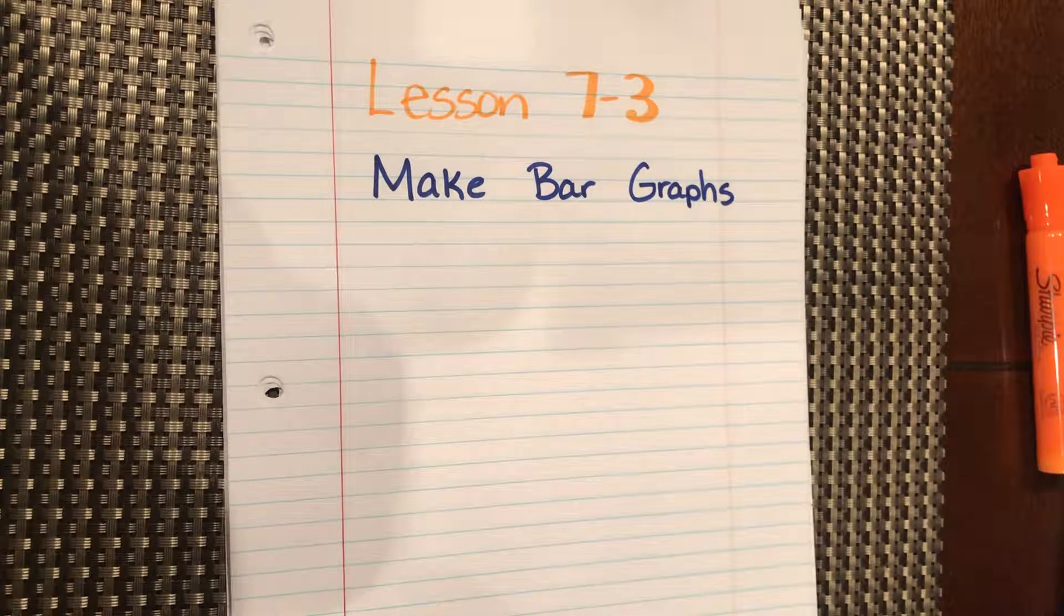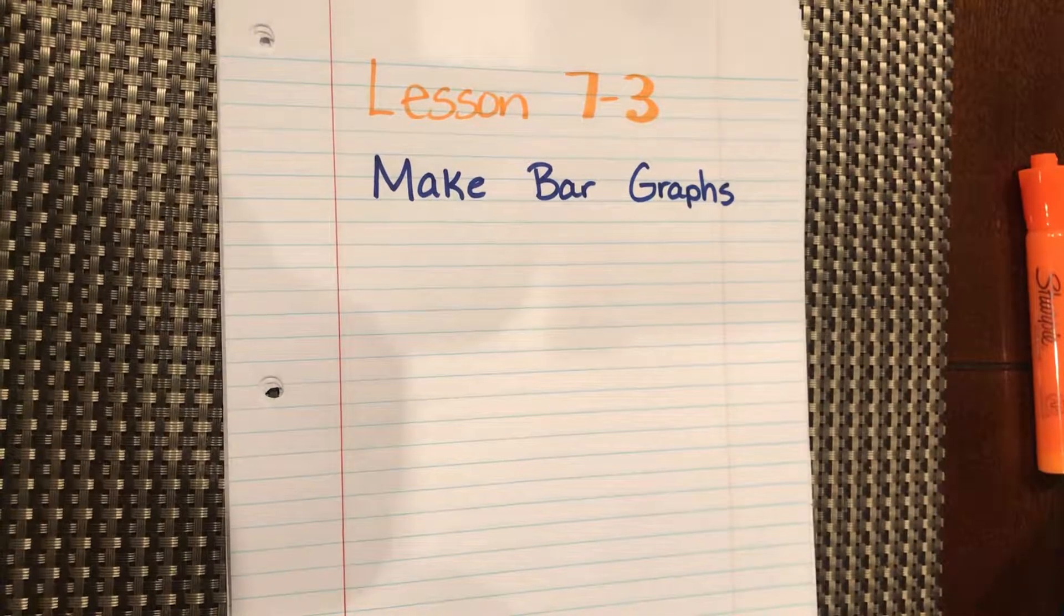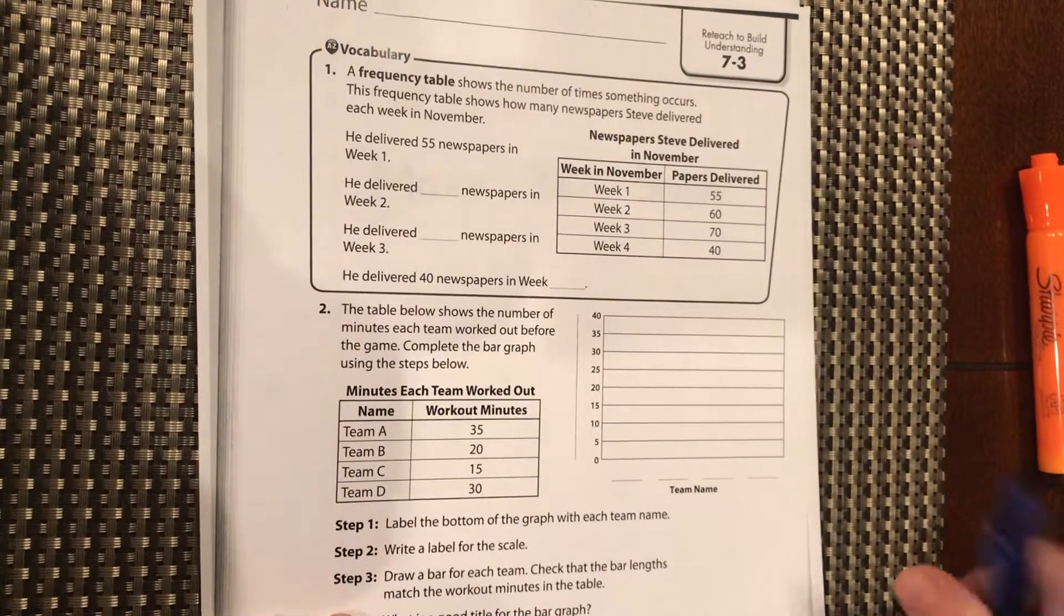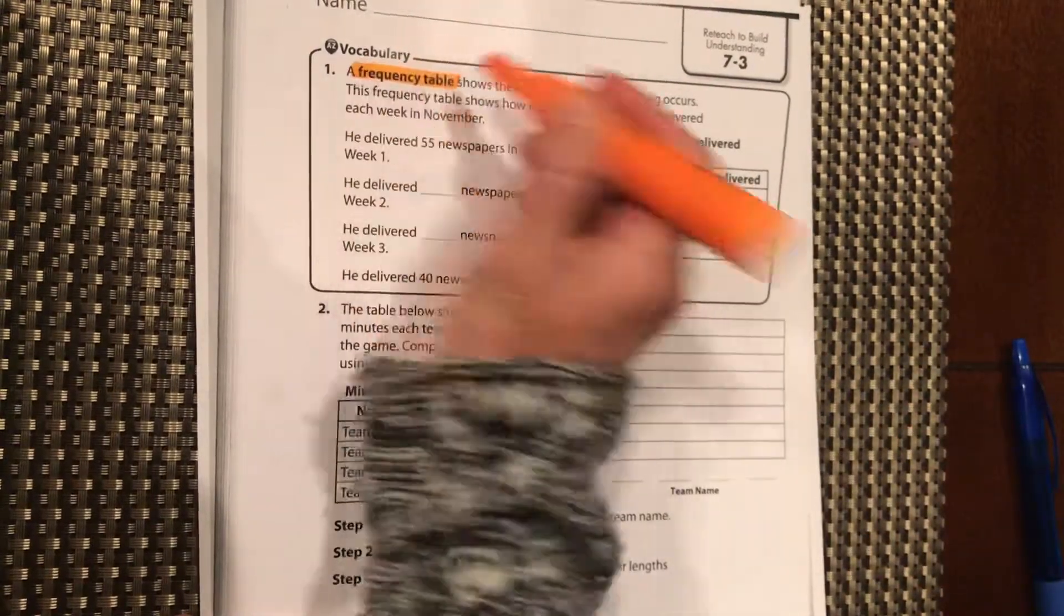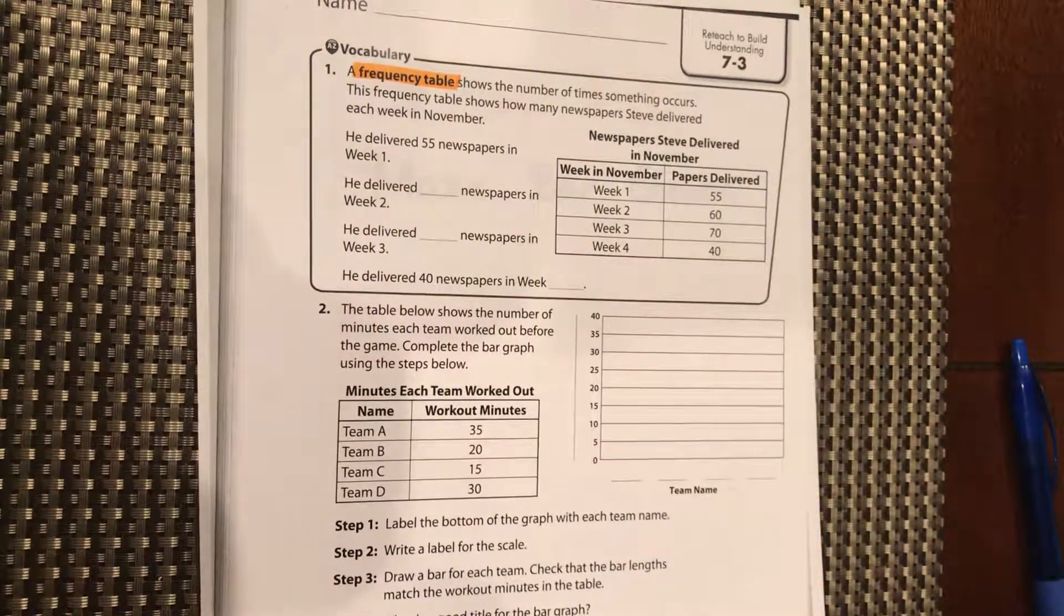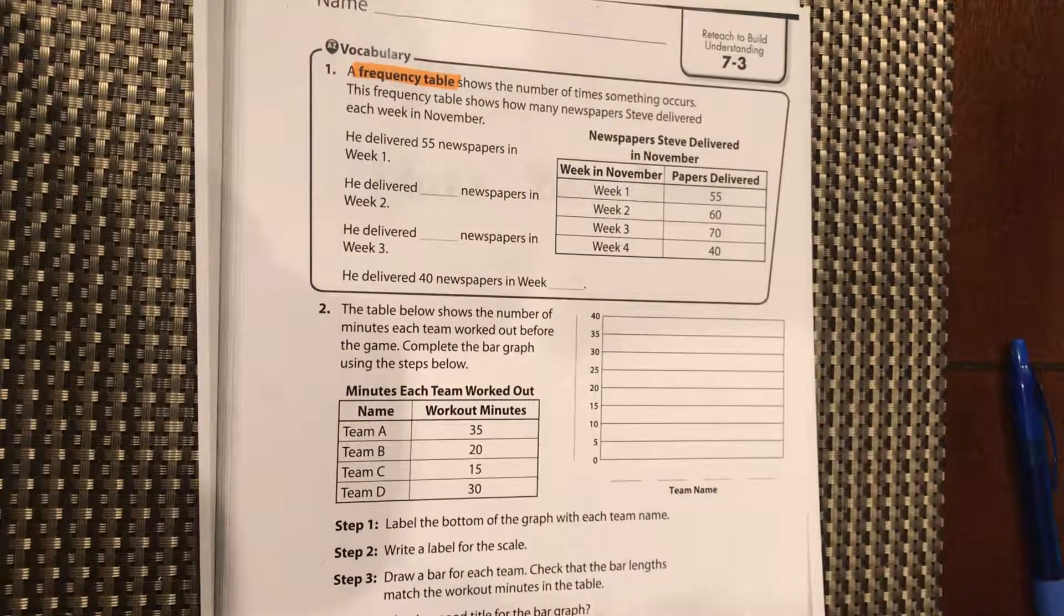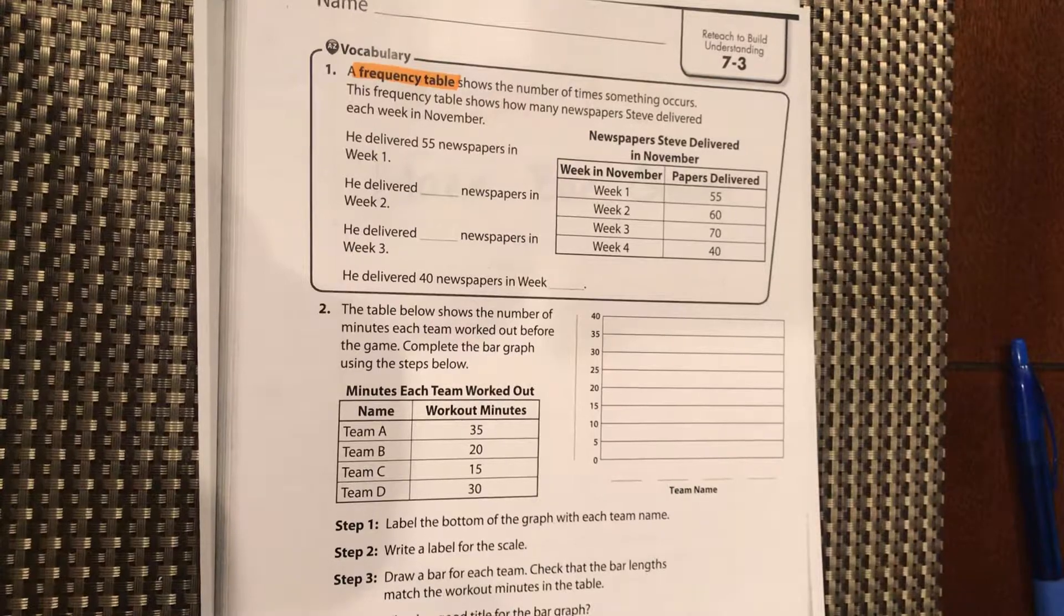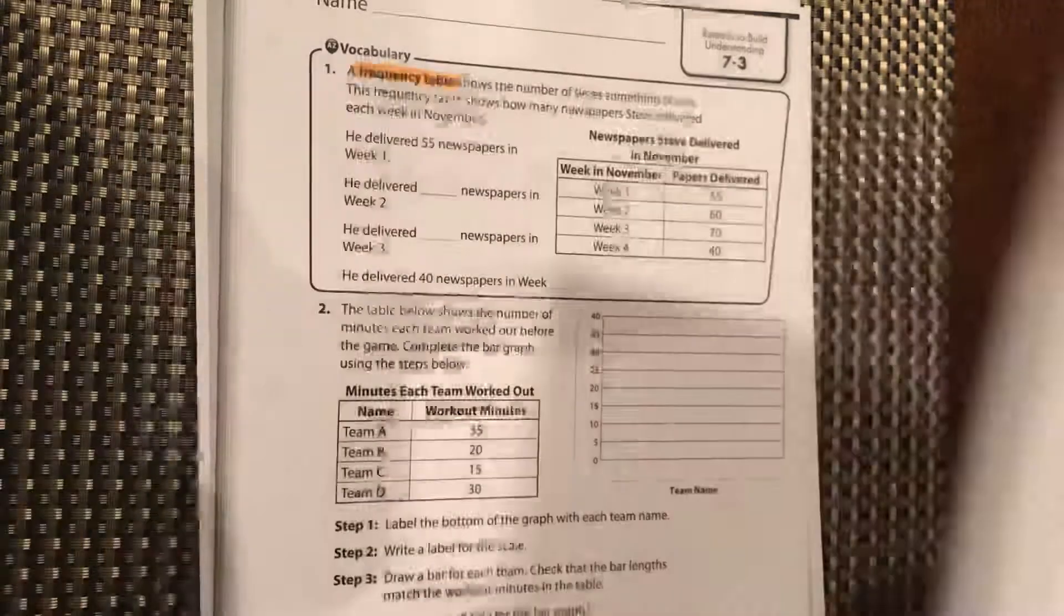Okay, lesson 7-3, making bar graphs. Let's get our sheet here. A frequency table shows the number of times something occurs. Frequency is how often something happens. We had a frequency table that we used yesterday to look at our favorite snacks. This was a frequency table.